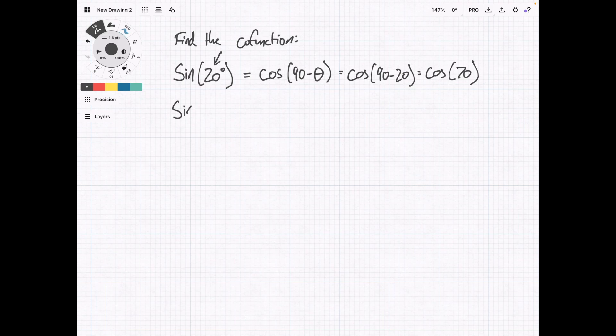Second example, we're going to have sine of 10 degrees. So our co-function is going to be cosine of 80. Then we have sine of 0 degrees, which is going to equal the cosine of 90 degrees. In both cases, these equal 0. So that's a cool one to know.